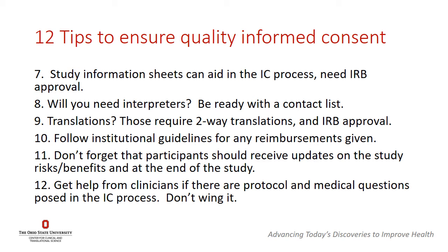Seventh, study information sheets can aid in the informed consent process but need IRB approval ahead of time. Eighth, will you need an interpreter for this consent? Be ready with a contact list if needed. Ninth, translations needed? Those require two-way translations and IRB approval — this needs to be done ahead of time and should not be a last-minute decision. Tenth, follow institutional guidelines for any reimbursements given for the study. Eleventh, don't forget that participants should receive updates on the study risks and benefits at the end of the study. Twelfth, get help from clinicians if there are protocol and medical questions posed in the informed consent process — do not wing it. This should be a planned process and you should go into the visit prepared to make the participant feel that you are knowledgeable and ready to give them the consent.